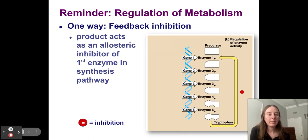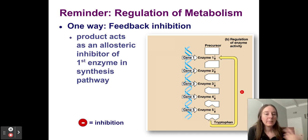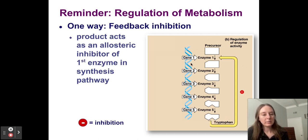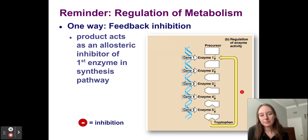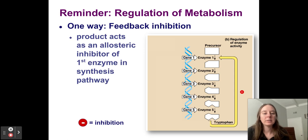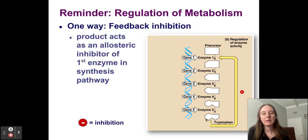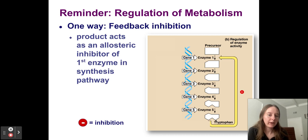Let's think back to what we know about building molecules. We know that chemical reactions build or break down molecules — anabolism is the building of a molecule. You start with reactants chemically manipulated to products, and you often use enzymes to speed up these reactions. There's a precursor molecule, then enzyme one, enzyme two — a series of reactions, a pathway, needed to build a molecule like tryptophan. But if you've built enough tryptophan, it will act as an allosteric inhibitor. Tryptophan will bind to enzyme one and cause a conformational change, stopping the whole pathway. We call this negative feedback.